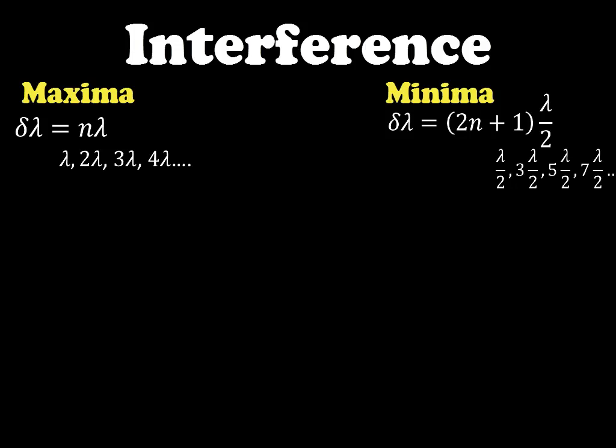We can also look in terms of phase differences as well. Since a lambda path difference corresponds to 2π phase difference, for construction we would need an integral multiple of 2π and for destruction, we would require odd multiples of π.